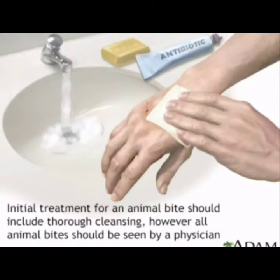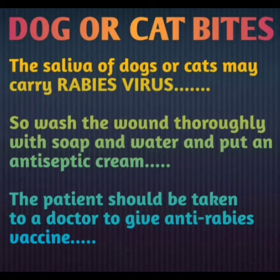After that, the patient should be taken to the doctor to give an antirabies vaccine, because the saliva of dogs and cats contains rabies virus. The patient should be given the antirabies vaccine so that the virus does not affect the body.